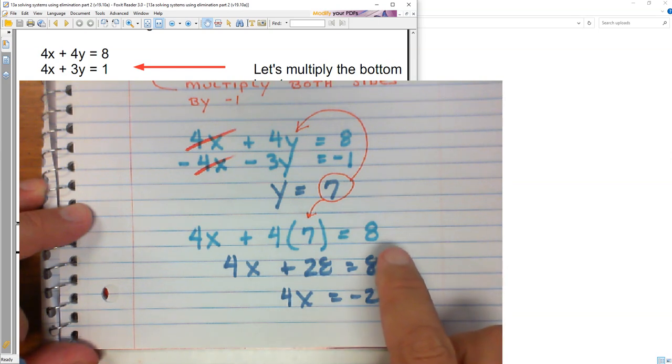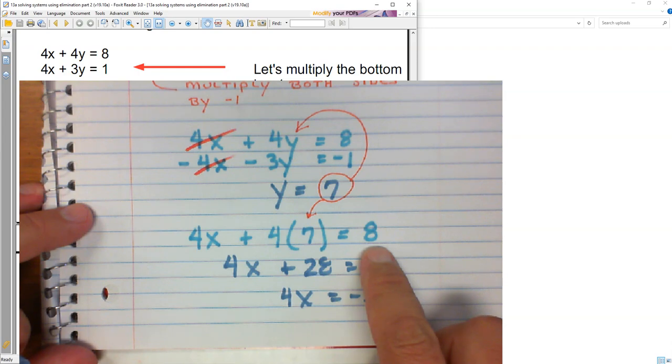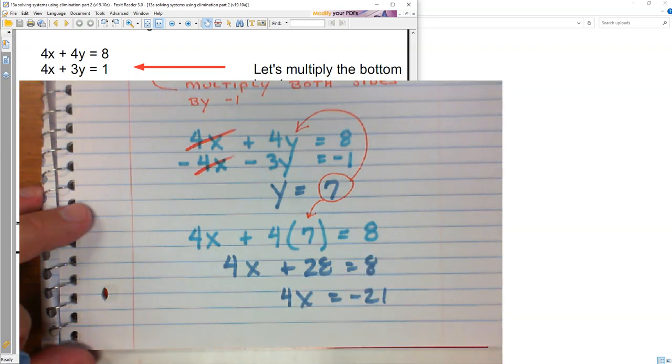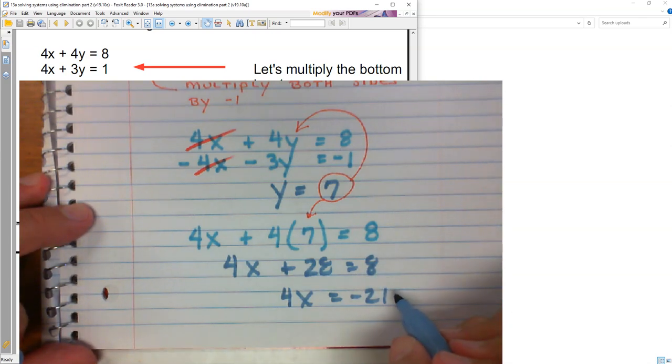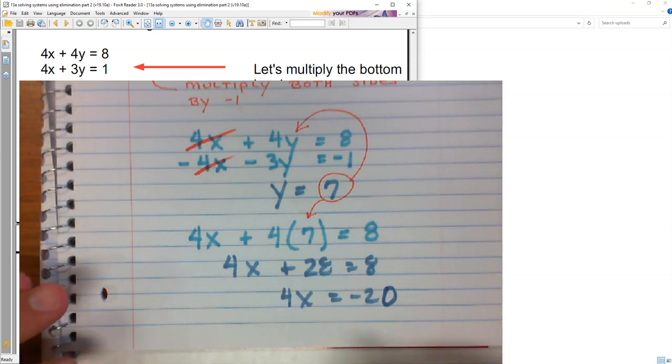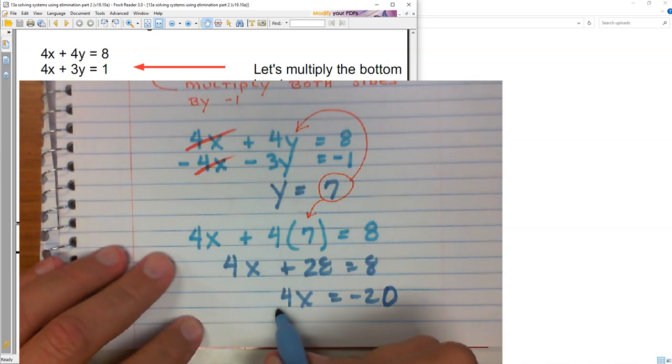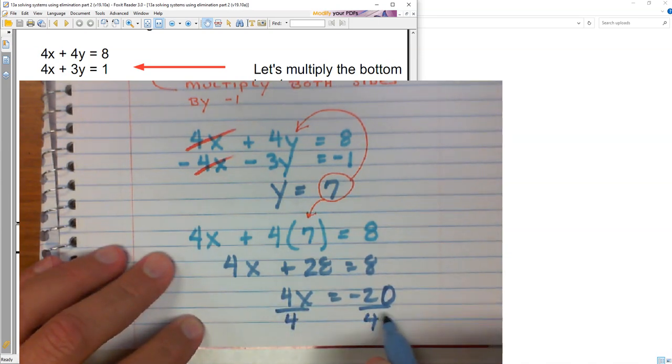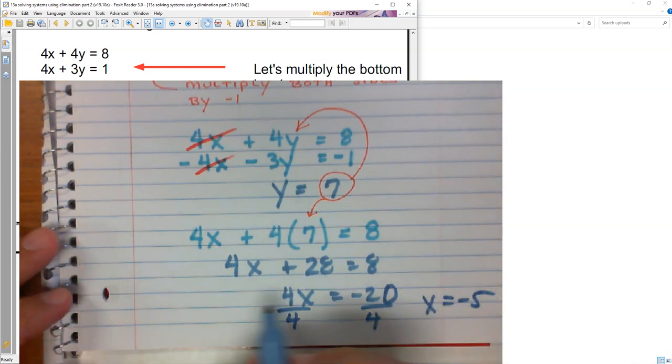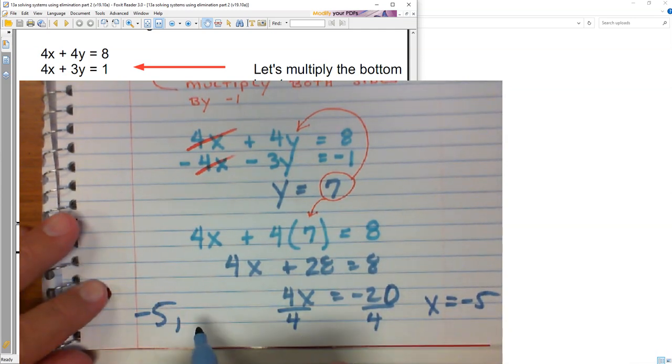And that's going to give me 4x plus 28 equals 8. So 4x equals negative 20. This is wrong right here. Why isn't this working for me? Because this isn't 21. How about this? Let's try negative 20. There we go. That's why you shouldn't skip steps. I tried to do it in my head and my head explodes. And dividing both sides by 4, so x equals negative 5.